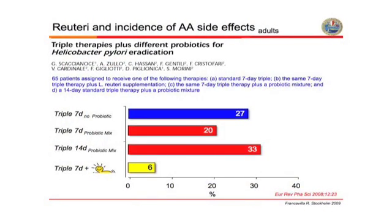A recent study compared Lactobacillus reuteri with other probiotics, monitoring the incidence of side effects in patients treated with triple therapy for 7 days with no probiotic, triple therapy for 7 days with a probiotic mixture (Probinol), Probinol added to triple therapy for 14 days, and triple therapy for 7 days using Lactobacillus reuteri. This study clearly shows that those treated with triple therapy plus Lactobacillus reuteri had a dramatic decrease in the incidence of side effects compared to those who received no probiotic or the probiotic mixture. This has become not just a single-center experience — multiple centers found the same results, strengthening the efficacy of this product.